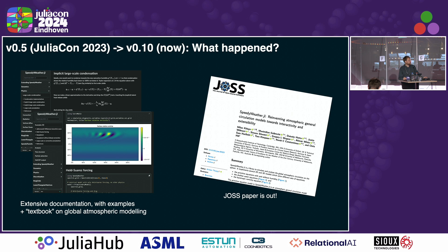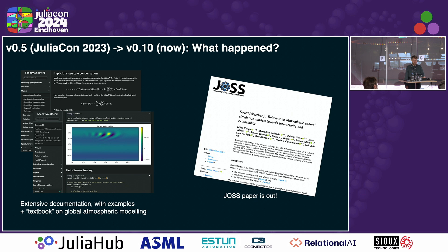I already talked about SpeedyWeather last year. Back then we were version 0.5, now we're version 0.10, and I'd like to release 0.11 soon. Since then, I've written a lot of documentation — if anyone wants to learn about global atmospheric modeling, you can almost use it as a textbook to understand how we're solving these equations. We also have a JOSS paper out now covering our approach to writing an extensible model, which I believe applies to much more than just atmospheric models.